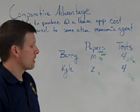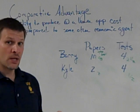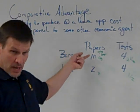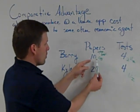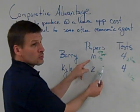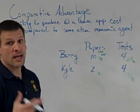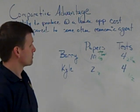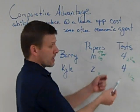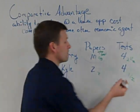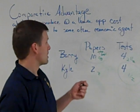Now I've figured out all the opportunity costs. The analysis ends with figuring out who has the lower opportunity cost in producing papers or tests. When Barry writes a paper, he gives up two-fifths of a test. When I write a paper, I give up two tests. Barry's opportunity cost is lower, so he has comparative advantage in writing papers. When Barry writes tests, he gives up two and a half papers, but I only give up one-half a paper. My opportunity cost is lower, so I have comparative advantage in producing tests.